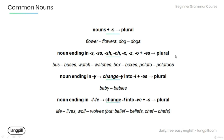For nouns ending in s, ss, sh, ch, x, z, or o, we add 'es' to make a plural. For example: bus → buses, watch → watches, box → boxes, potato → potatoes.